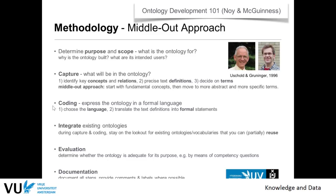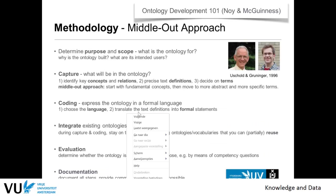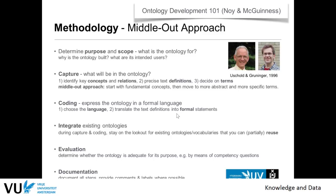Then we do coding: we choose the language. If the ontology is very expressive, we use OWL; if very simple, we use SKOS; and in between, RDF Schema. We add a text definition of the ontology — perhaps a drawing and a text definition — and then translate this into formal statements. For OWL and RDFS, we can use Protégé, or type Turtle syntax directly. We will get a .owl or .rdf file in Turtle notation.